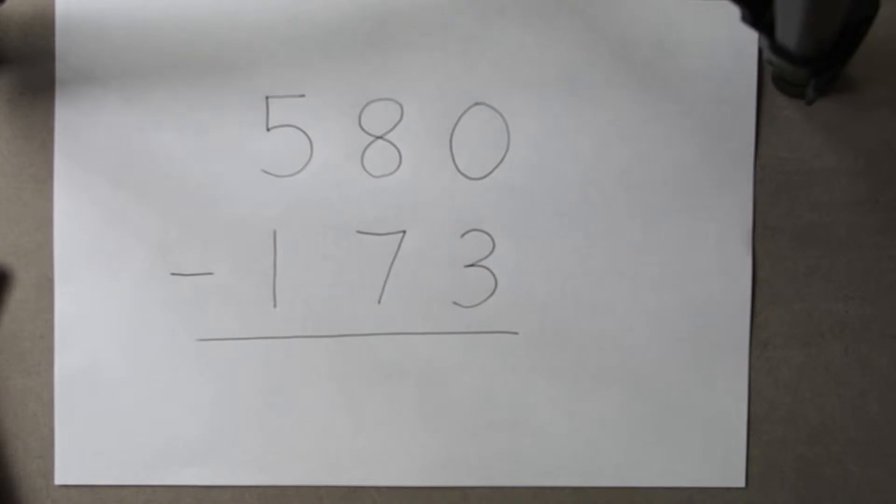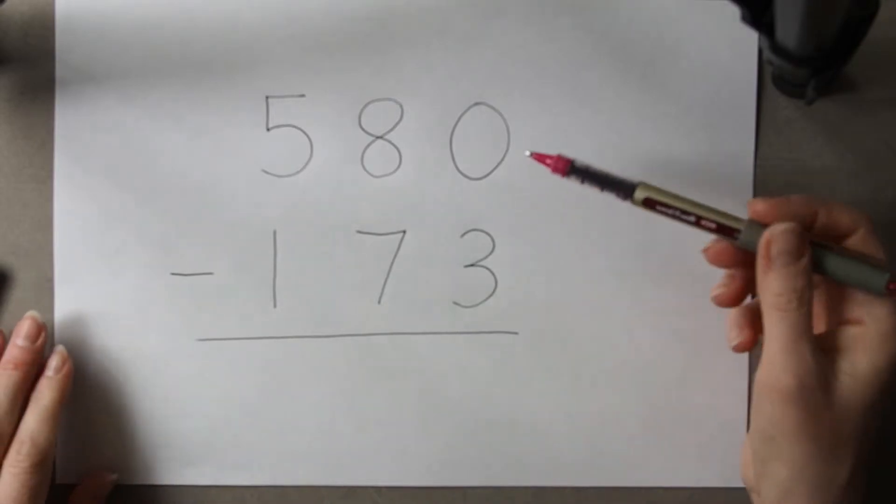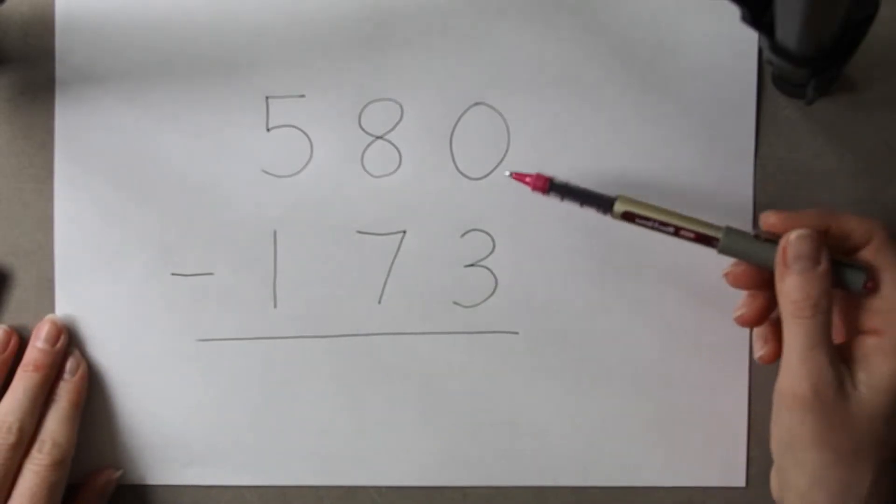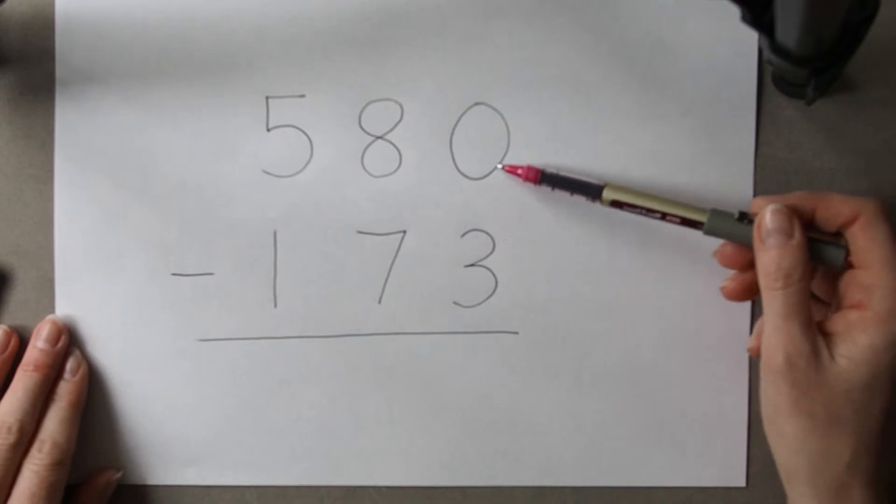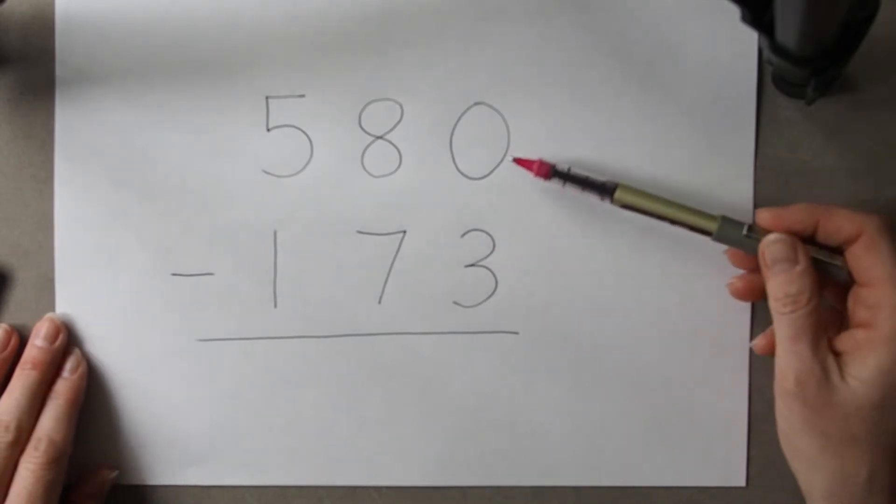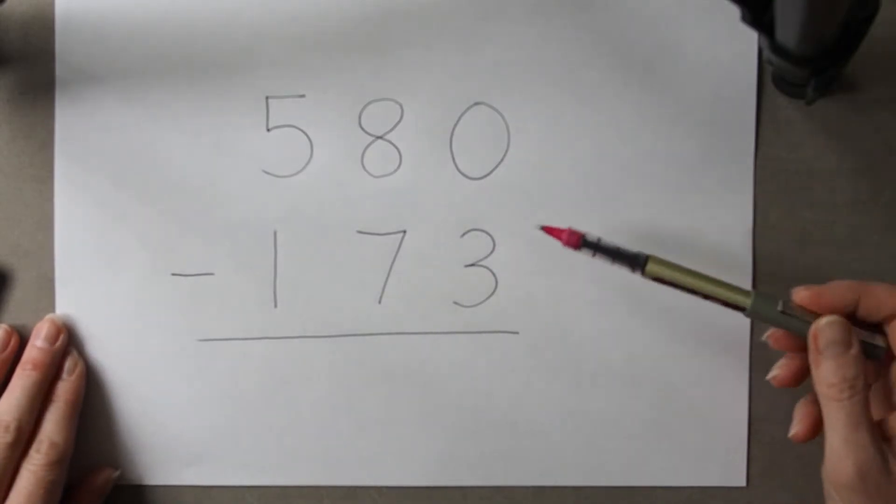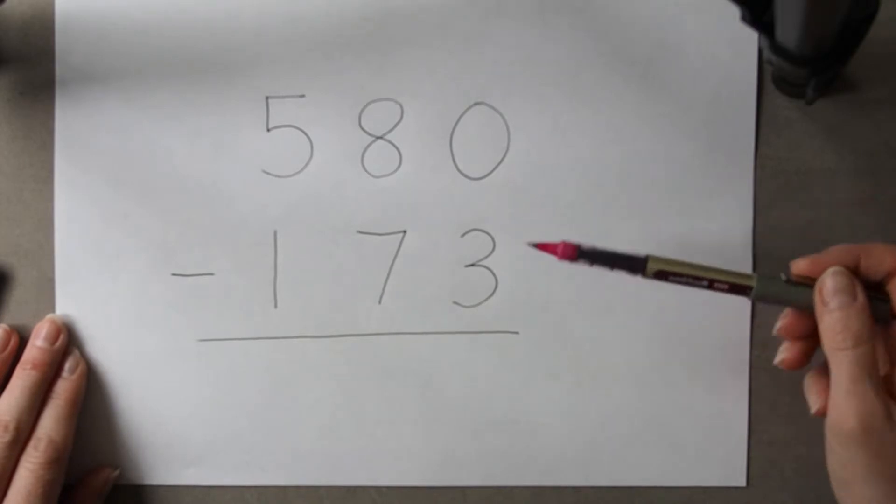Zeros can cause some confusion in written subtraction. Particularly, pupils may look at this calculation and just switch these digits around. So instead of saying zero subtract three, they say three subtract zero, or they may just look at both.